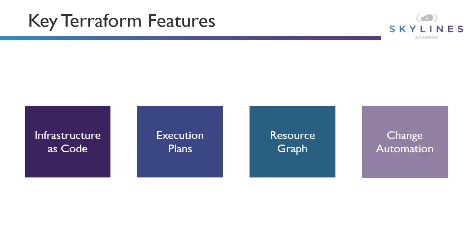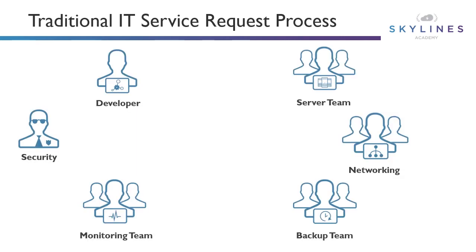Finally, we have change automation. Complex change sets can be applied to your infrastructure with minimal human interaction. With the previously mentioned execution plan and resource graph, you know exactly what Terraform will change and in what order, avoiding many possible human errors as well.